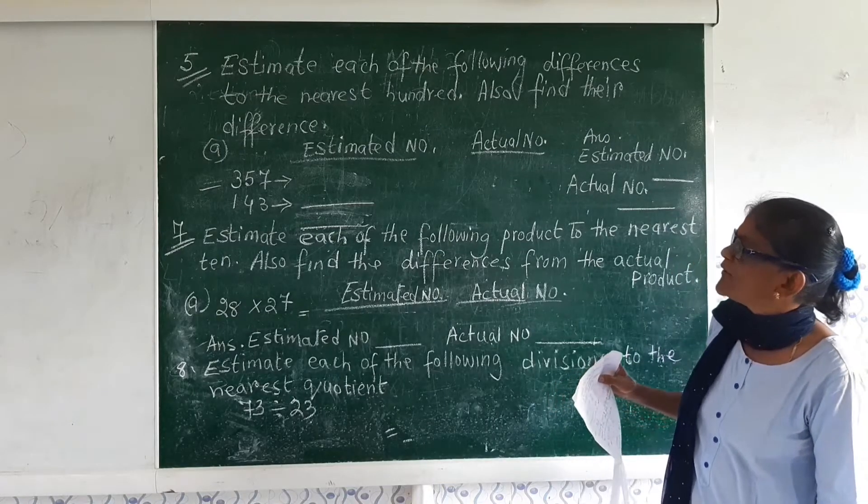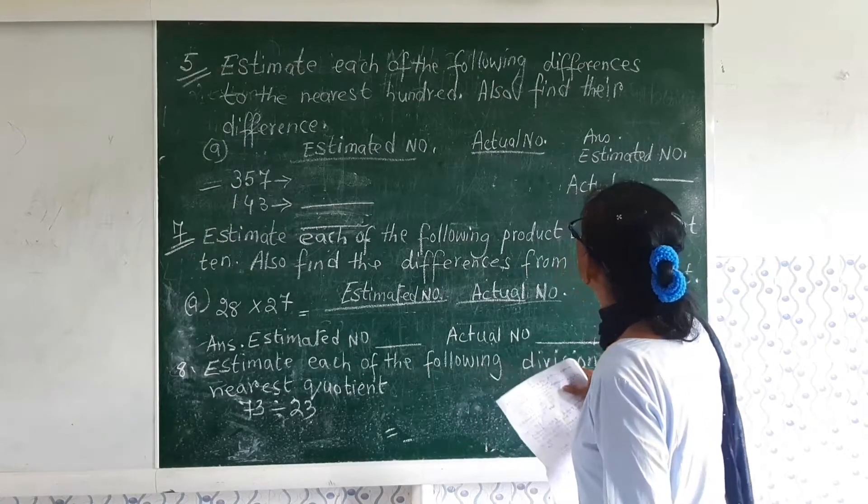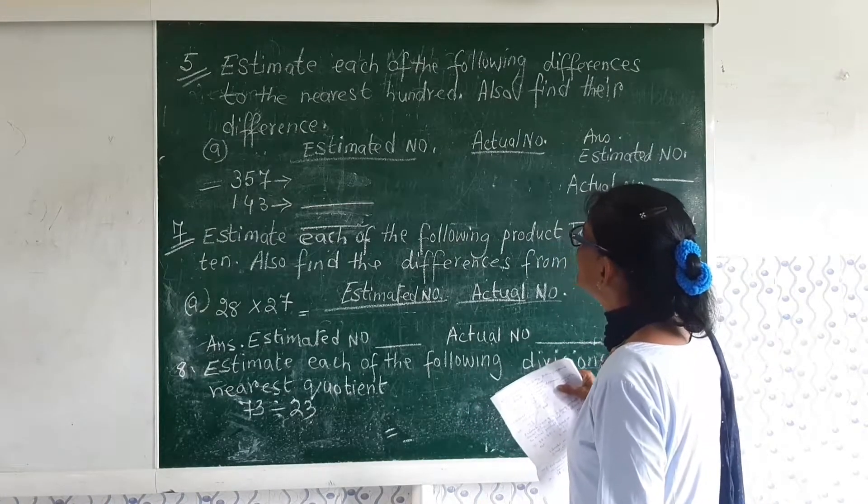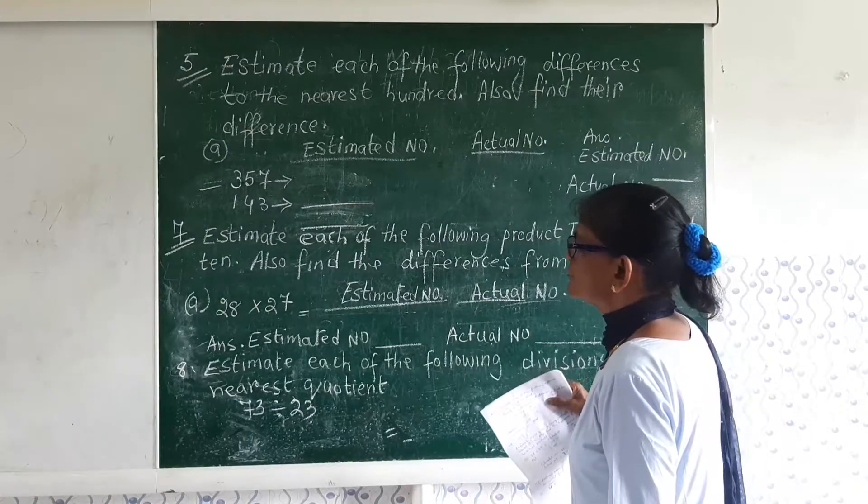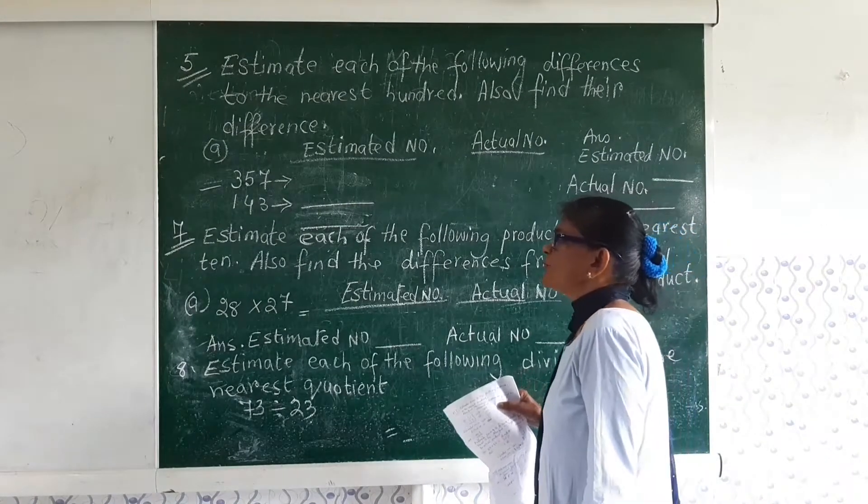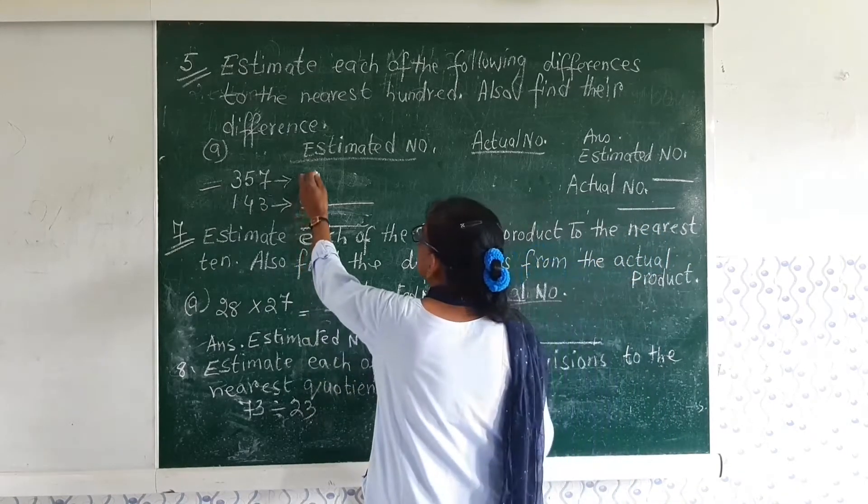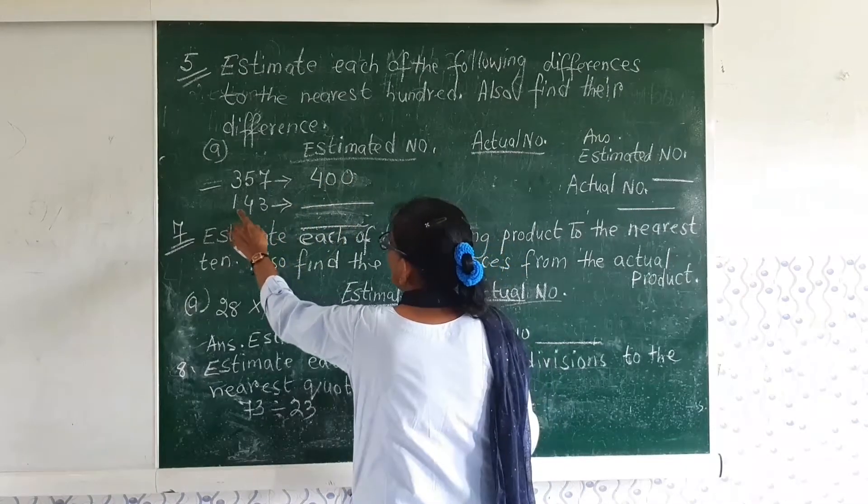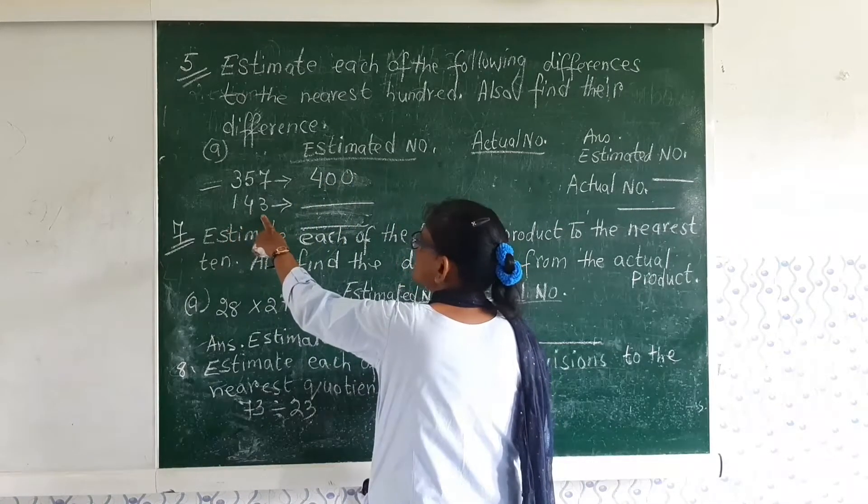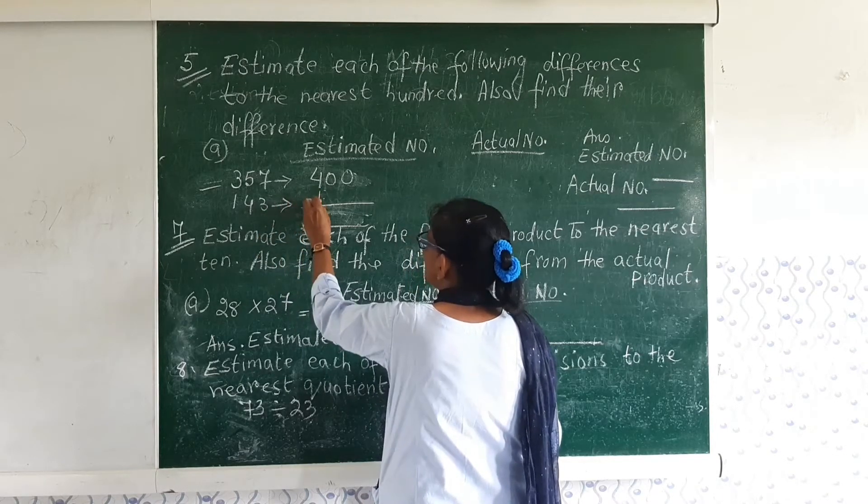Children please pay attention. Now I read sum number 5. Estimate each of the following differences to the nearest 100. Also find the difference. So 357 which means is more than 50, so it will turn to 400.